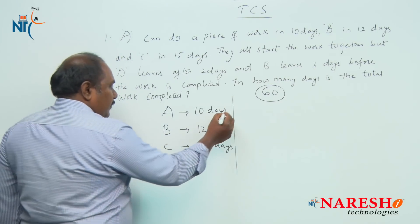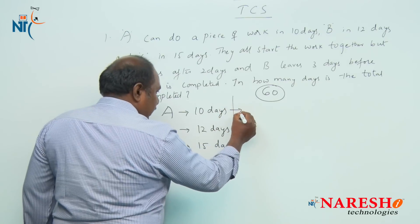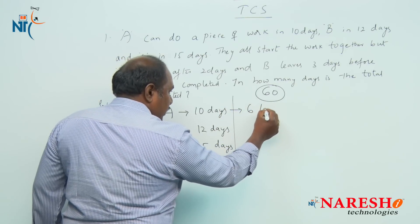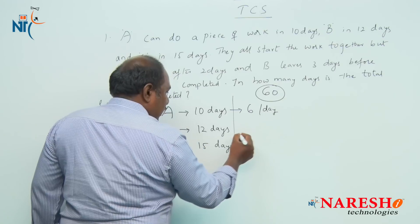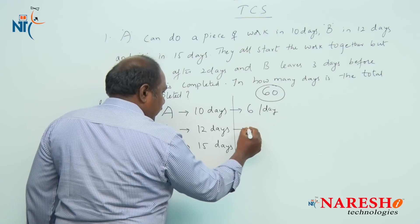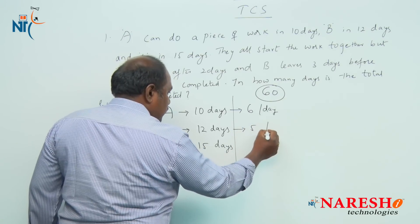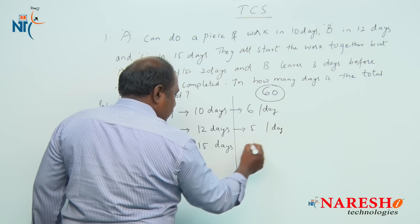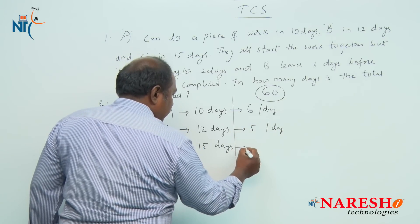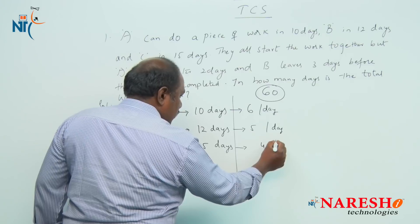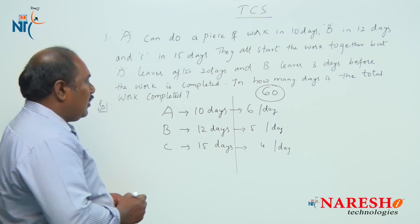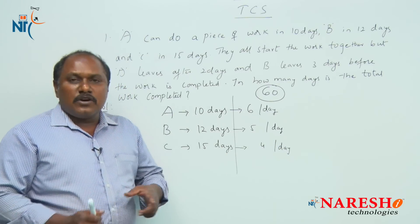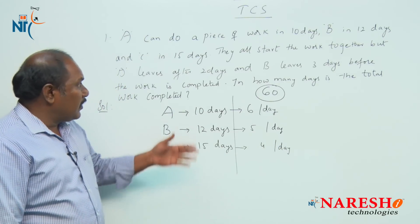Then A should eat 6 chocolates per day, B should eat 5 chocolates per day, and C should eat 4 chocolates per day. Now let us solve the problem.